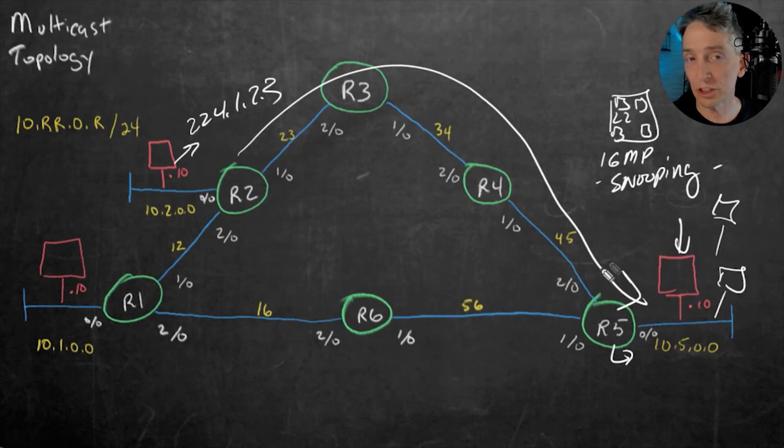The router in combination with the switch, looking at those, snooping in or eavesdropping on those IGMP messages, can identify, hey, the person off this port, they want that multicast traffic. And the switch can then forward that multicast traffic once it's on the segment to that specific host on that port.